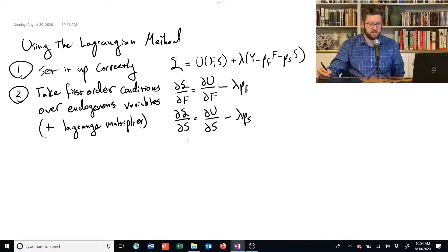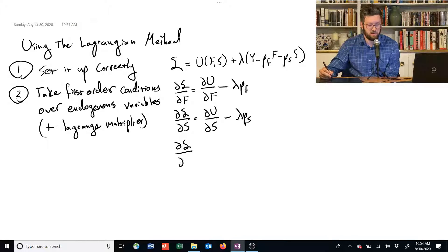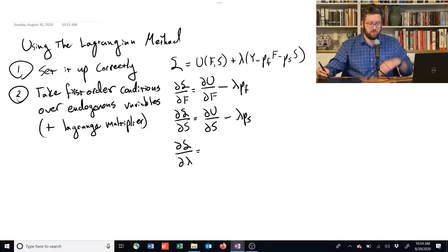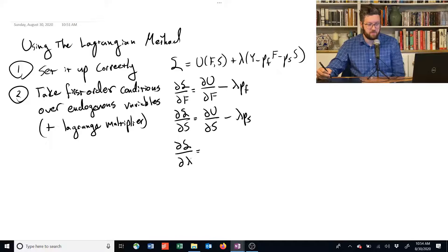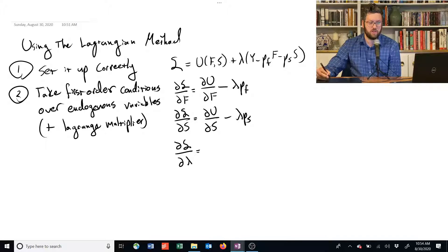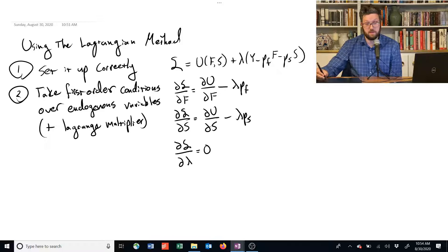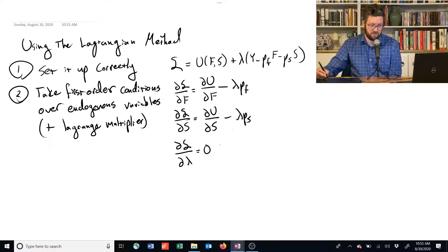And then we also need to take the first-order condition with respect to the Lagrange multiplier, so a third one. Even though that's not something that we're really going to consume, it is endogenous and is something we use. So, if we take the derivative with respect to this, there's no lambda in the objective function, which is just this utility function, so nothing there. But it does appear here. It has no exponent or anything over it, so the derivative of it is just 1 multiplied by this big term in parentheses.